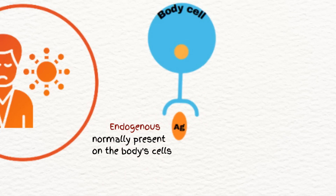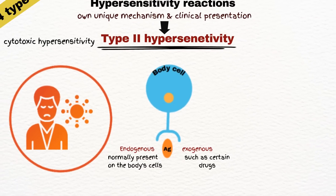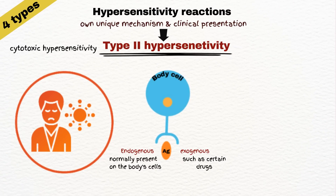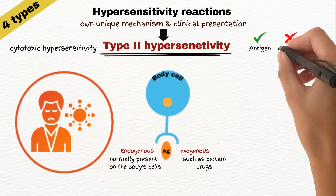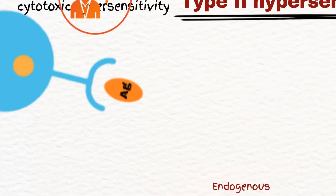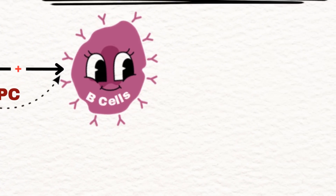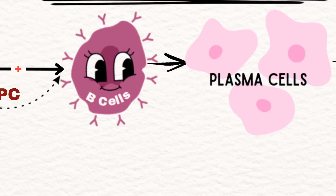However, exogenous antigens such as certain drugs that bind to cell membranes can also trigger this reaction. Notice that in this type of hypersensitivity, the term is antigen, not allergen as in type 1. These antigens activate B cells either directly or through antigen-presenting cells. The activated B cells differentiate into plasma cells, which are specialized for antibody production.